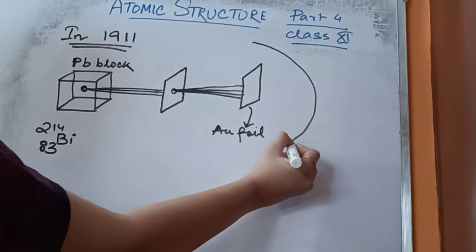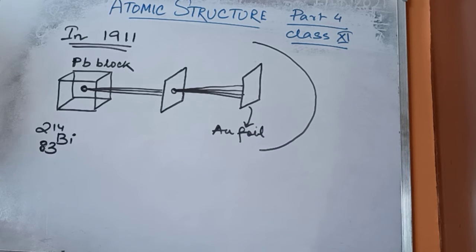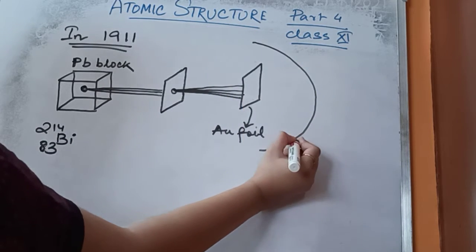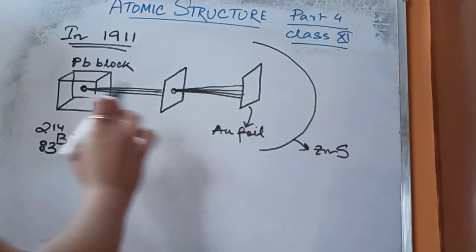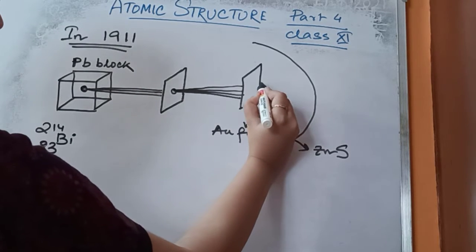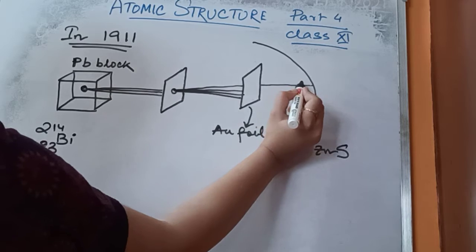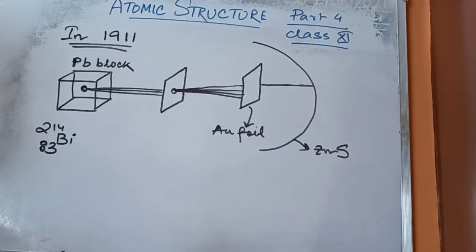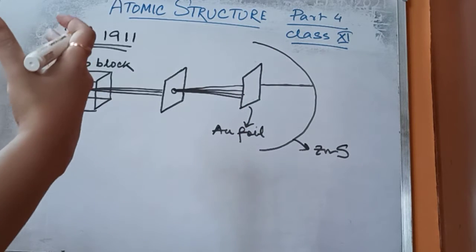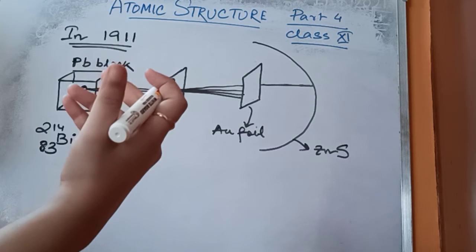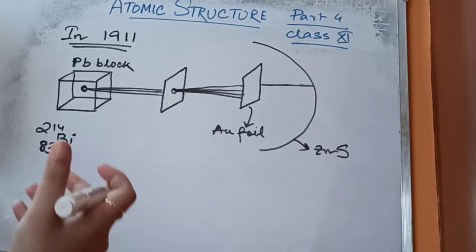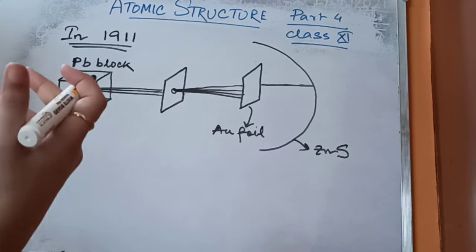Around the gold foil, he kept a fluorescent screen. He coated the entire screen with zinc sulfide. When the alpha particles strike this screen, there is a flash of light, which is known as scintillation. From these scintillations, they can observe the path of the alpha particles.